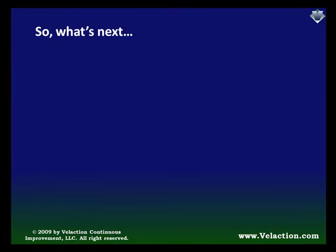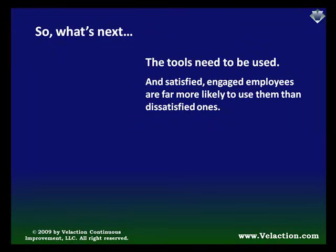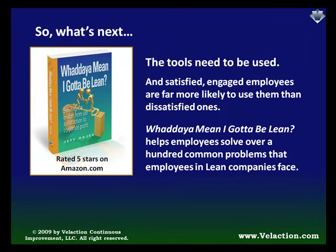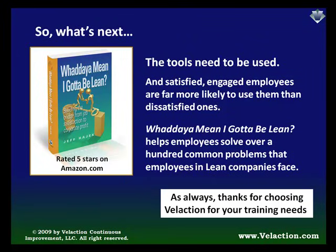That concludes the instruction on this course. I'm a big believer that team members will be unlikely to use tools such as this one if they are not engaged and committed to the lean process, and they won't do that unless they understand how lean can benefit them personally. My book, What Do You Mean I Gotta Be Lean?, gives over 100 practical solutions to common lean problems. Overcoming these obstacles lets people focus on the value that lean offers them. I encourage you to look at my website, www.vilaction.com, for more information. Don't forget to download your free, 6-page PDF file with more 5 Whys information. I'm Jeff Hajek, wishing you all the best on your lean journey.